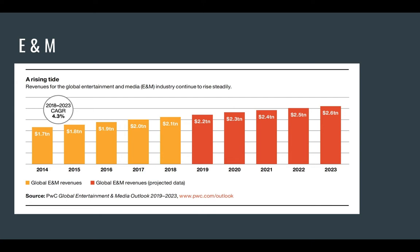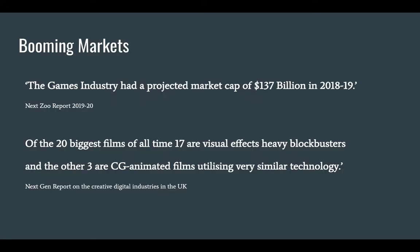We can also see this from some of the companies that are now very big players in this sector, such as Amazon, Apple, and Netflix - really the market overall has become an international market and there's quite a lot of money trying to win that market at the moment. This is driving the entertainment and media sector, particularly in film, and Ireland has benefited from that. From the entertainment and media industry we're specifically interested in areas such as the games industry, animation, film, and TV. The games industry has a projected market cap of 137 billion in 2018-2019 and is growing very, very quickly. Looking at the top 20 films, 17 are visual effects heavy blockbusters and the other three are CG animated films which utilise very similar techniques and technology.